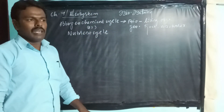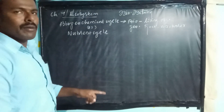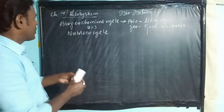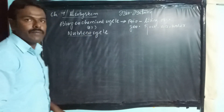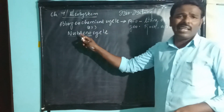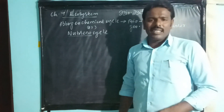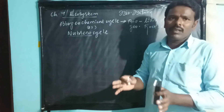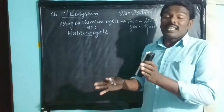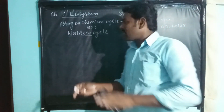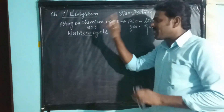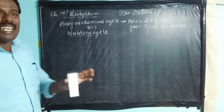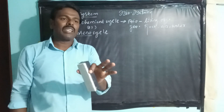The biogeochemical cycle refers to the exchanges of nutrients between the organism and the environment. What is the meaning of nutrient? The substance that provides nourishment, essential for the maintenance of life — that is the nutrient. This is essential for the ecosystem.